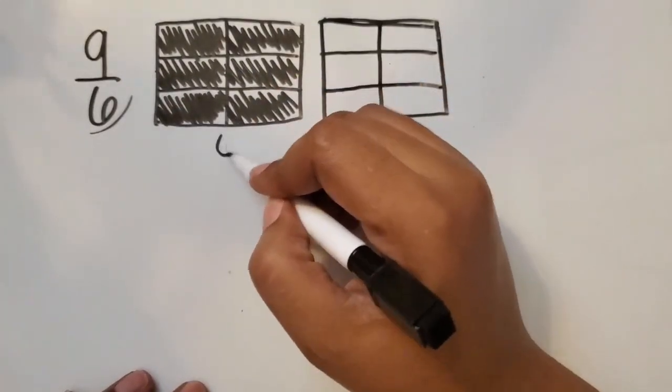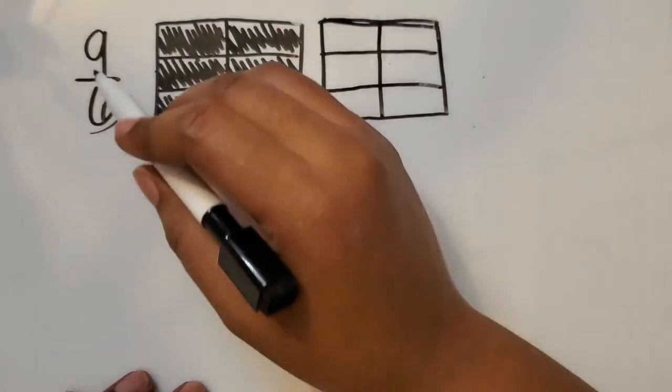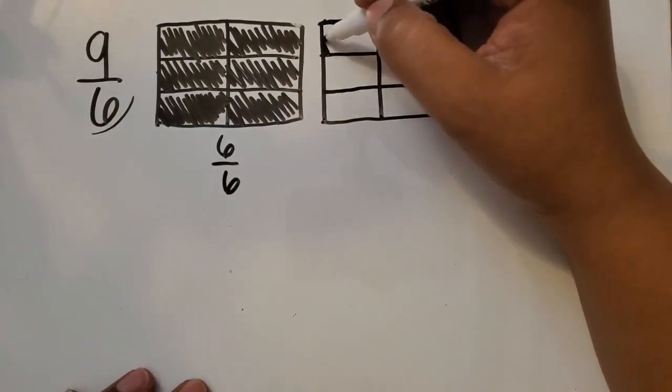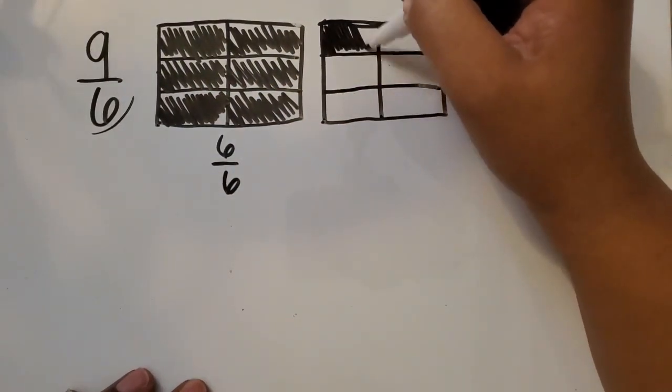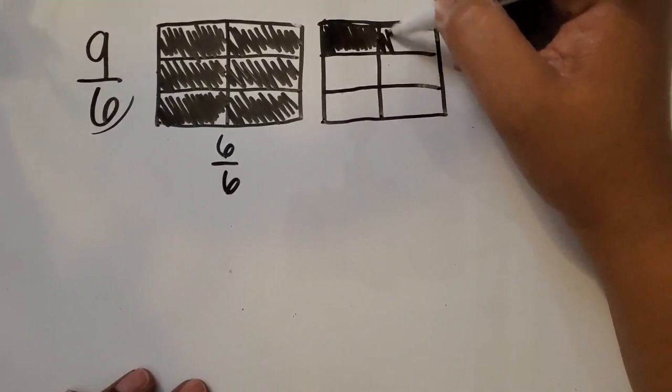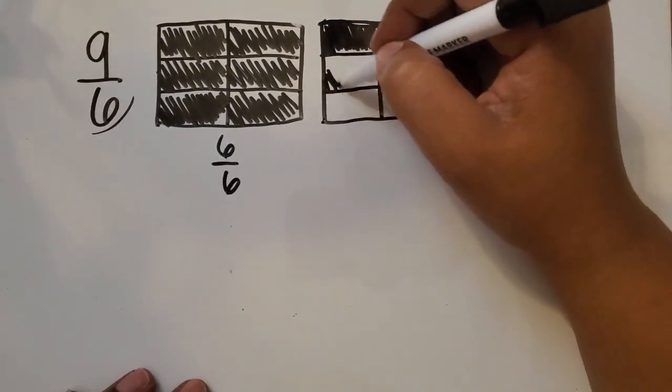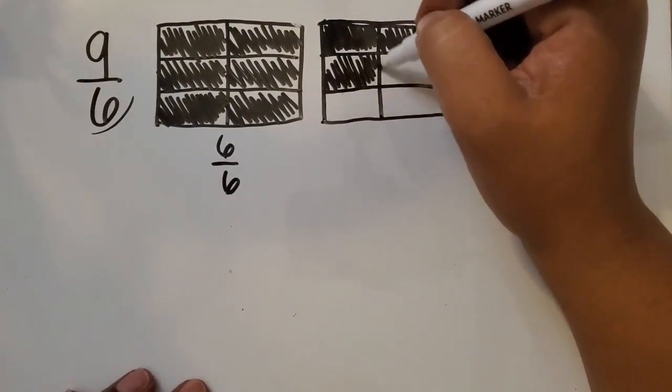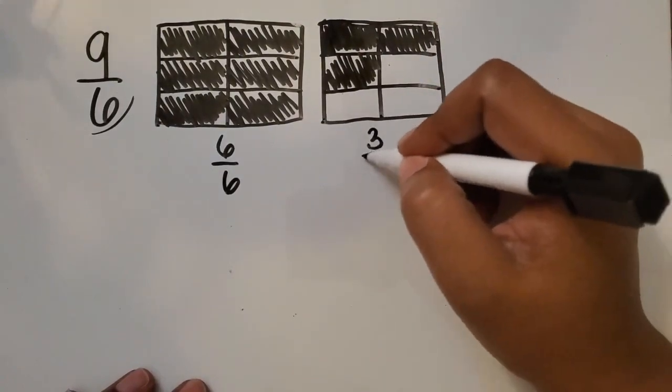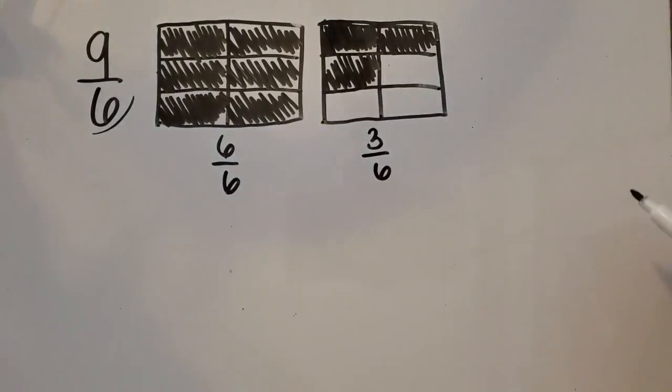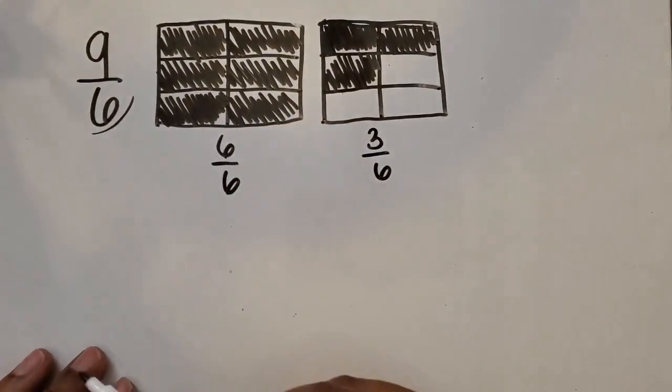So I already have 6/6. We can write that down. I need to get to 9/6. So let's see. One more is 7/6, 8/6, and 9/6. So we have 3/6 here and 6/6 here. Together, that equals 9/6.